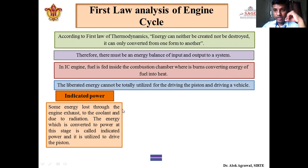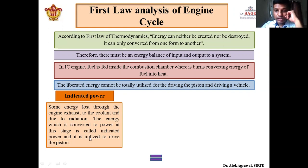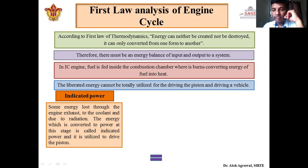The fuel produces X energy; we reduce the energy lost in the form of exhaust gas, coolant, and radiation. The remaining energy is called indicated power, and this energy is utilized to drive the piston. Indicated power is the amount of energy utilized to drive the piston, and it will always be less than the energy liberated by the fuel. So: total fuel energy minus energy lost in exhaust gases, coolant, and radiation equals indicated power.